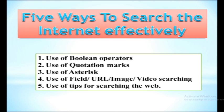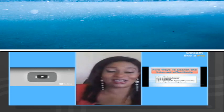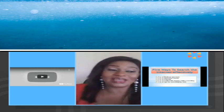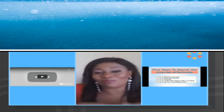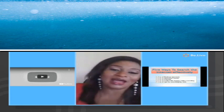Let's move on to the five ways to search the internet effectively. I'm going to cover five major ways: the use of Boolean operators, the use of quotation marks, the use of asterisks, the use of field, URL, image and video searching, and of course tips for searching the internet. Whatever you want is on the internet — that's why it's called the information superhighway. I actually call it my wellspring of information because there's nothing I've ever wanted that I didn't find on the internet.